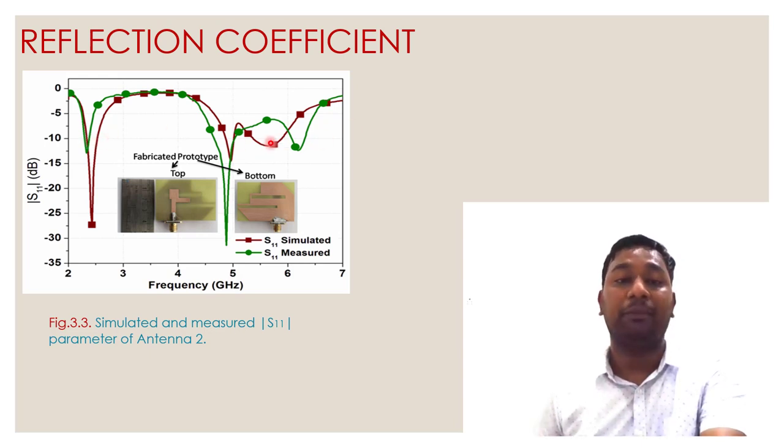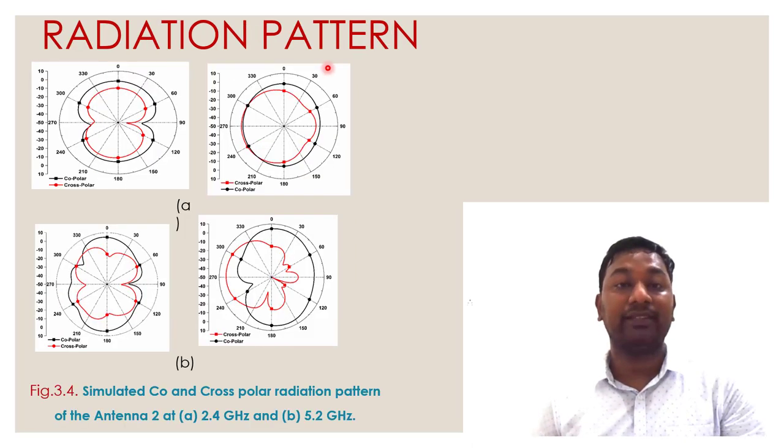There are some mismatches in measurement and simulated results. We can overcome those mismatches in our final structure. Radiation pattern is an important parameter of the antenna. We can see both antennas work in 2.4 and 5.2 gigahertz region. Both antennas have dipole type radiation pattern.